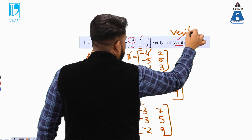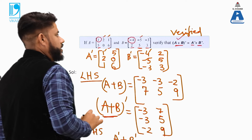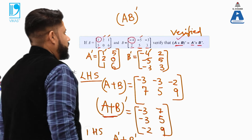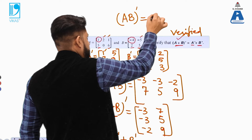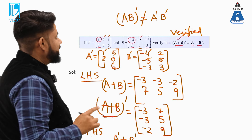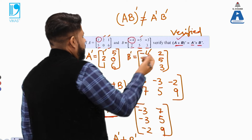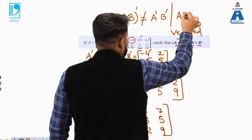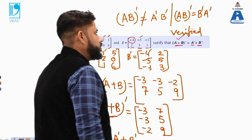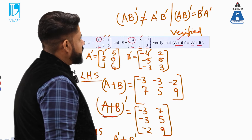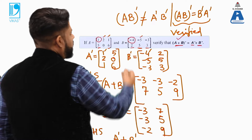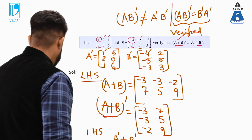Note: this property holds for addition, but for multiplication it is different. (AB)^T is not equal to A^T × B^T, because matrices are not commutative. The correct formula is (AB)^T = B^T × A^T. You can verify this with the given matrices as well.